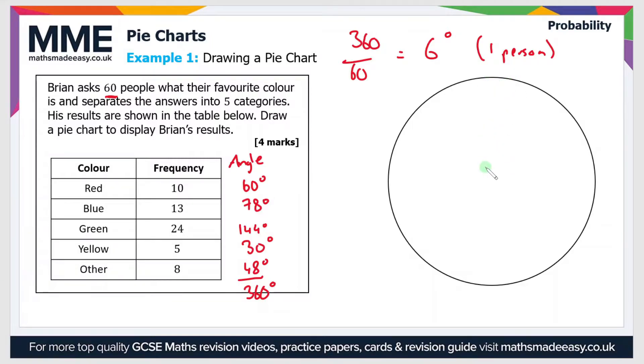So the first category is the red category and that has an angle of 60 degrees. So let's draw that. Now I haven't got a protractor here but when you're doing this in an exam make sure that you are using a protractor to measure the angles. So that's the red category and that should be an angle of 60 degrees.